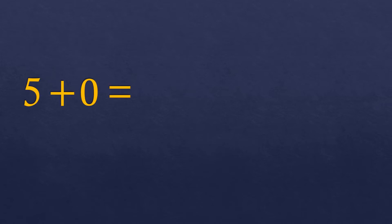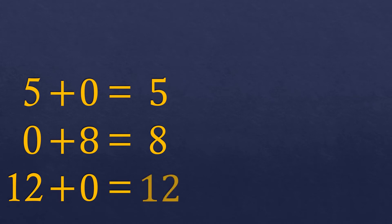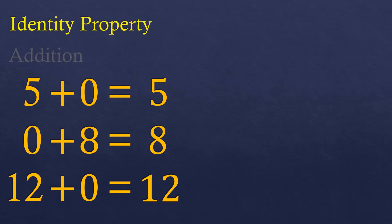So 5 plus 0 equals 5, and 0 plus 8 equals 8, and 12 plus 0 equals 12. The point is if you add any number by 0, the answer is just itself. This is true for any number, according to the identity property of addition. Any number added to 0 is just itself, and we need a rule stating this so it has a proper mathematical basis.